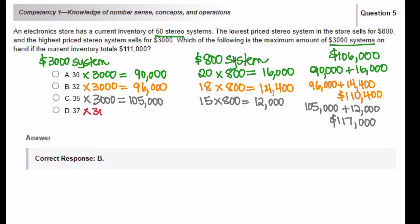Answer choice D, 37 times $3,000. That's going to get us exactly $111,000. If there are 37 of the $3,000 systems, then it must be 13 of the $800 systems. So 13 times $800 is going to get us $10,400. Now let's put the two systems together. $111,000 plus $10,400 is going to get us $121,400.